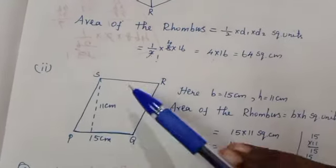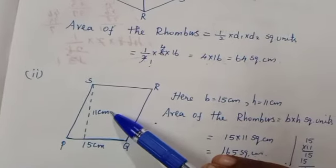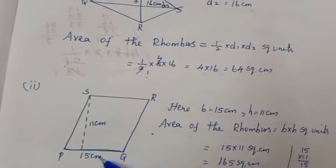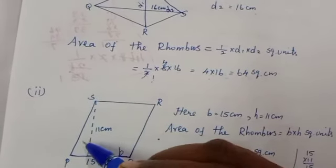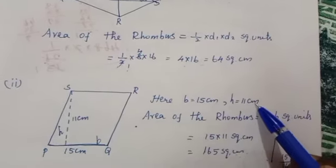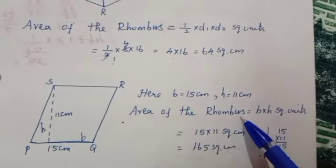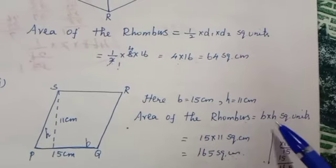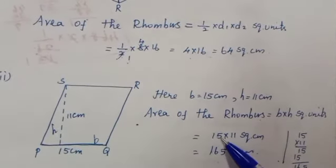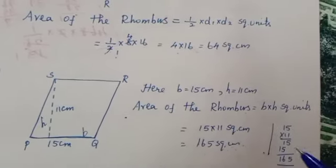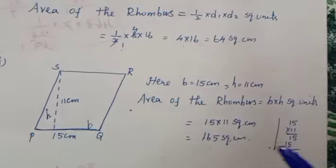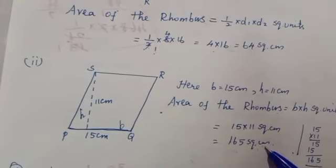The second diagram: it is base and height. B is equal to 15 centimeter, H is equal to 11 centimeter. Area of the rhombus — base and height are given — formula is B into H square units. 15 into 11 equals 165 square centimeter.